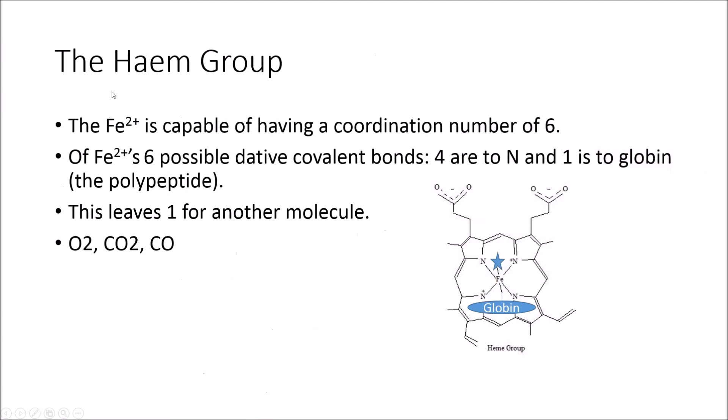So now we're going to look at the heme group. The heme group is that group we looked at earlier contained in haemoglobin. Heme literally means iron, so that's a good thing to remember. Fe2+ is capable of having a coordination number of six. That basically means that it can form six dative covalent bonds with the molecules around it. So of Fe2+'s six possible dative covalent bonds, four are to this N. This isn't just N on its own, this is N as part of this massive group here. So actually it bonds, it's a multi-dentate ligand because it forms a bond in four places on this one molecule.